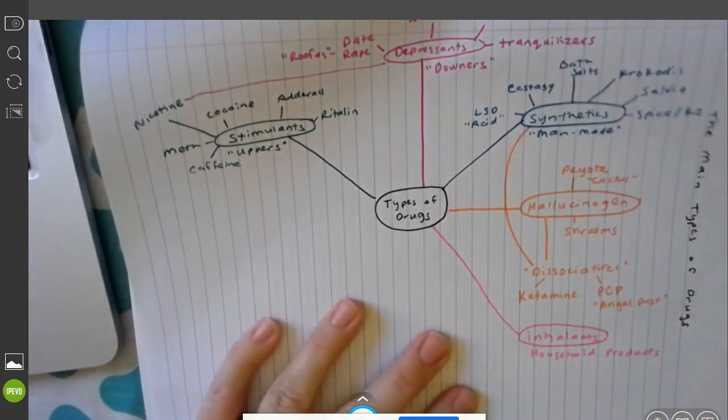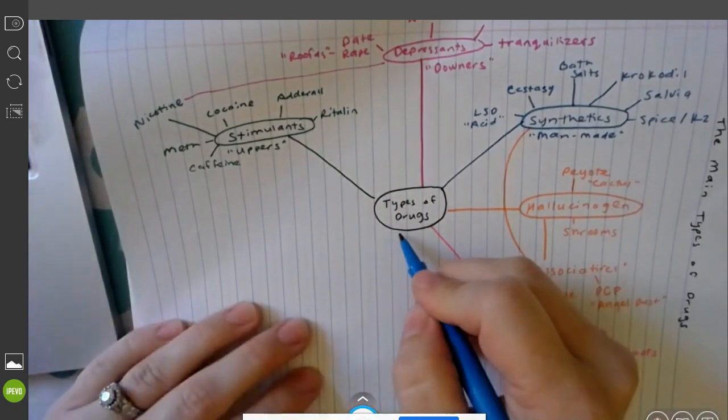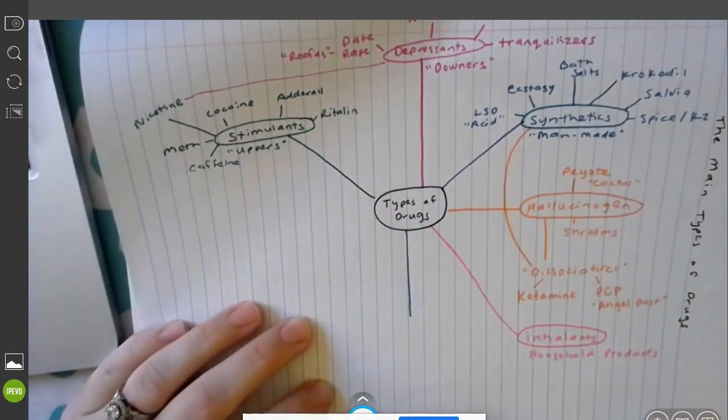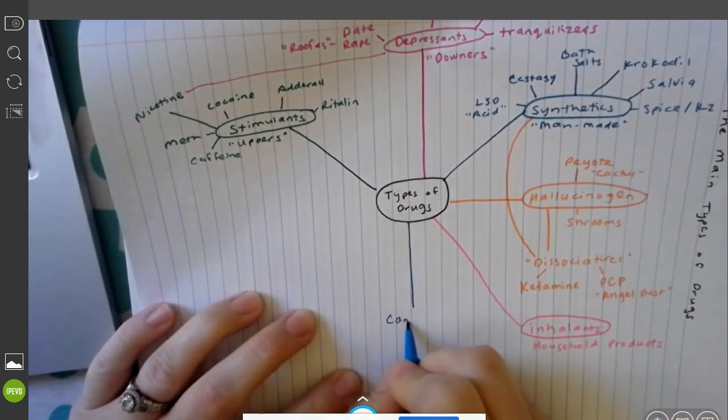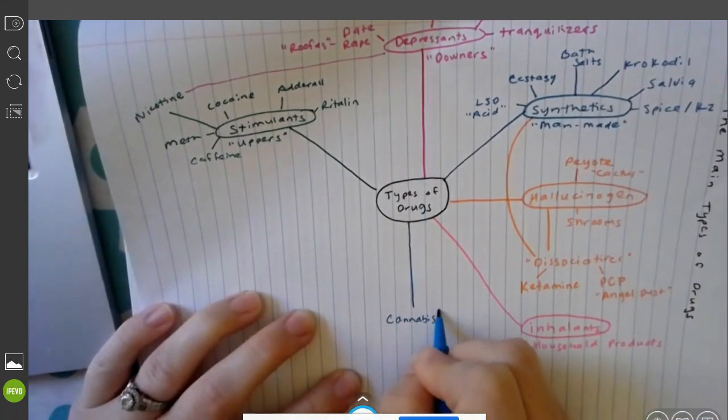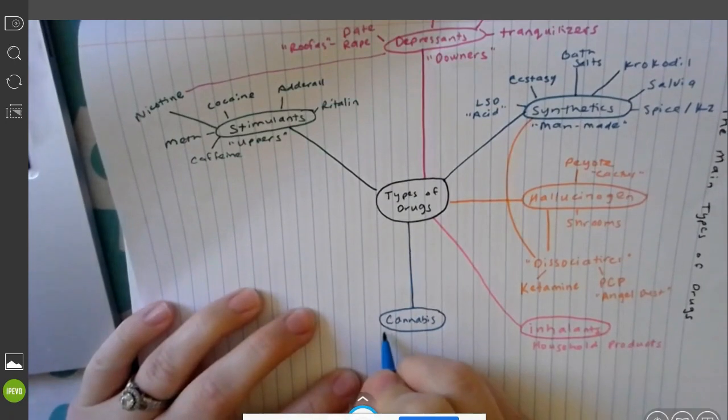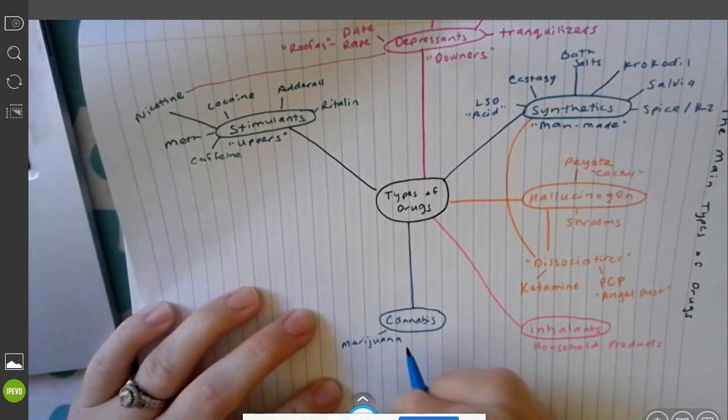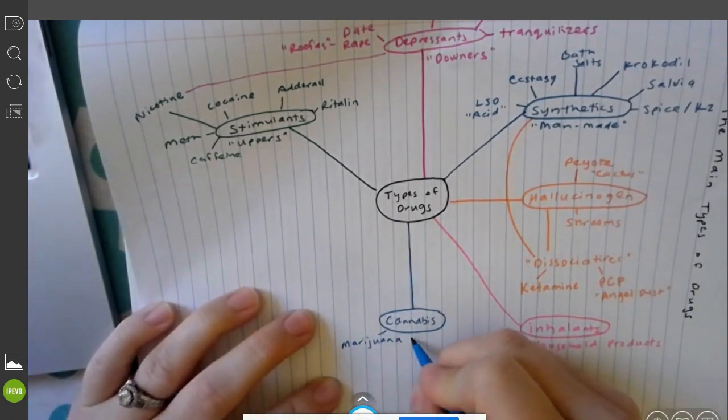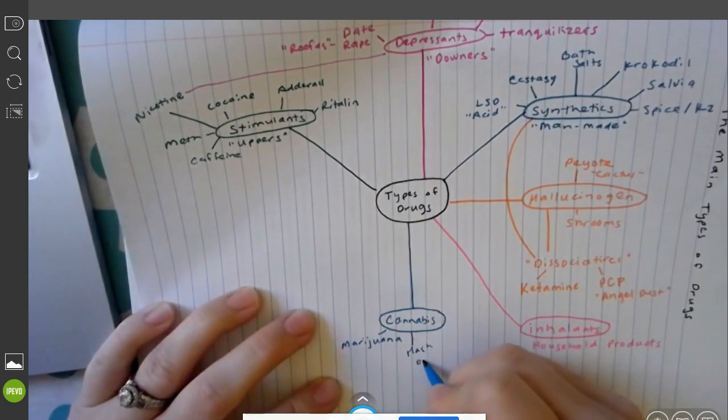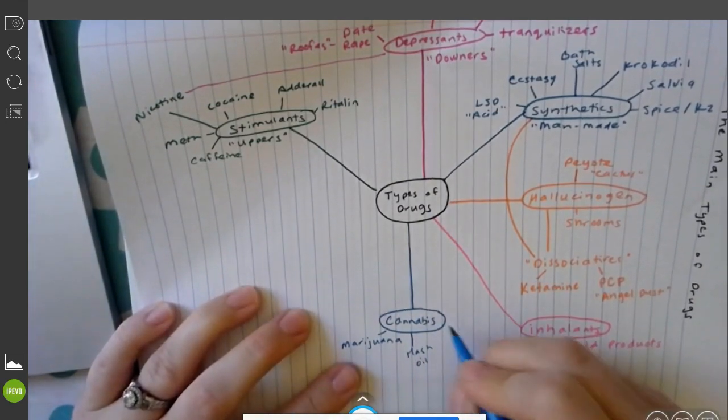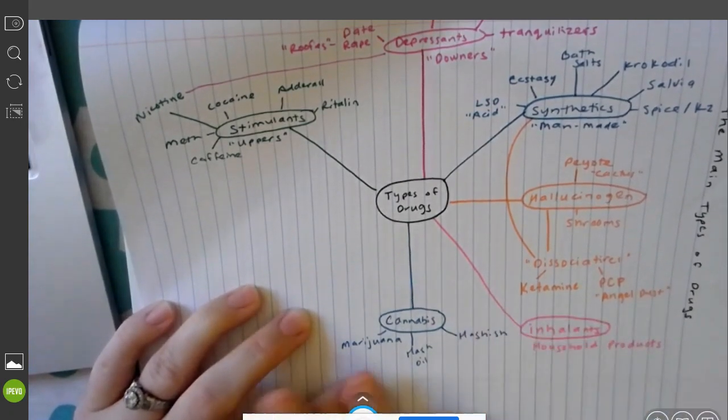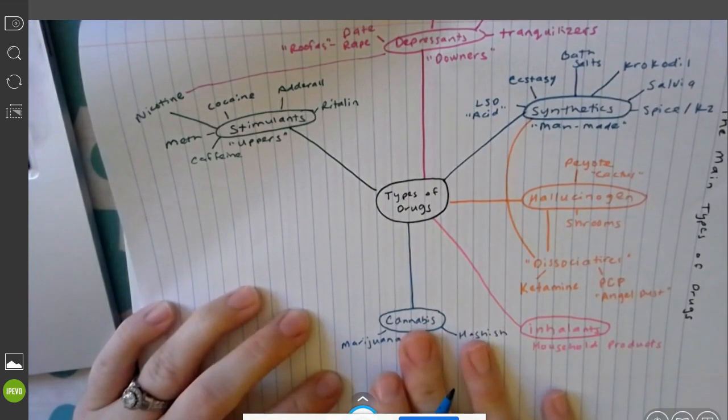The next category of drugs is going to be your cannabinoids or I'll just put here cannabis. You guys know these as just basically marijuana. We'll talk about marijuana and CBD oil in a few weeks or days. You also have your hash oil, we use that sometimes to make edibles, things that people eat like brownies to get high, and hashish. So these are all derivatives of the cannabis plant that are used to achieve some sort of a high for the person.